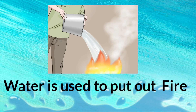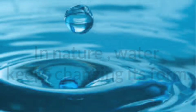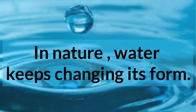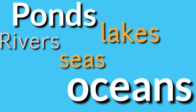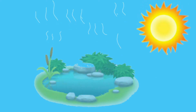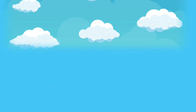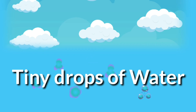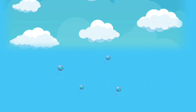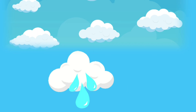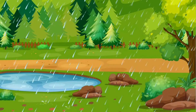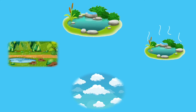Water is also used to put out fire. In nature, the water keeps changing its form. The water in ponds, lakes, rivers, seas and oceans gets heated up by the sun and rises in the form of water vapors. High up in the sky, these vapors cool down and form tiny drops of water. These tiny drops join together to form clouds. On further cooling, the drops get bigger and fall down as rain. This never-ending cycle of water is called the water cycle.